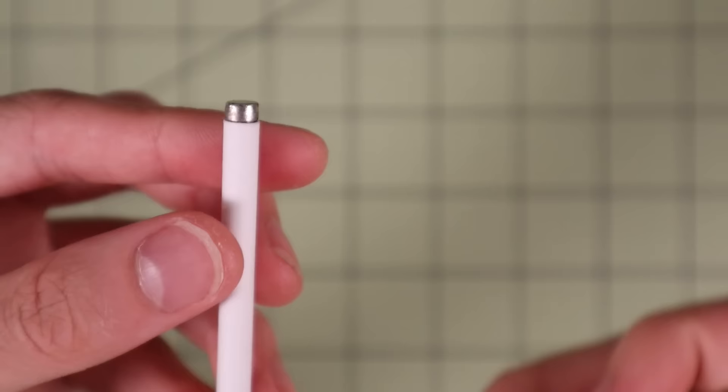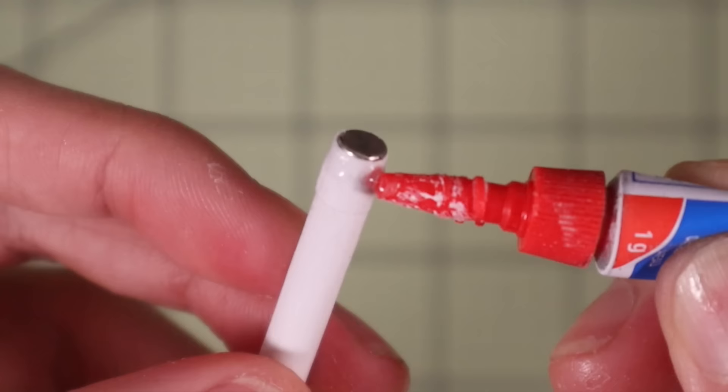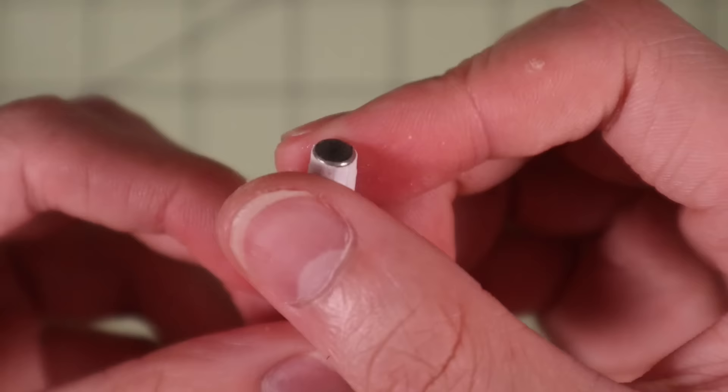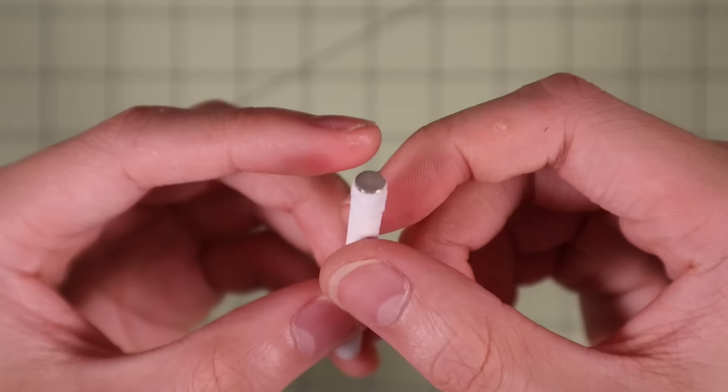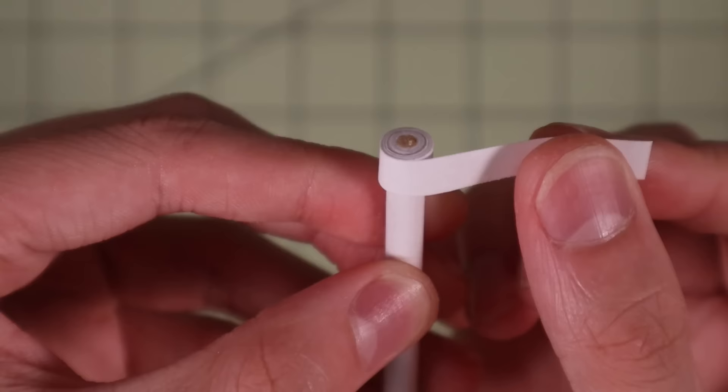Now I'll glue a 5x3 magnet to the end of that bullet and then wrap a tiny strip of paper around it to reinforce it and make sure the magnet won't fall off. Flip it over and I'll wrap a strip of paper around the tip here because on this side I'm going to glue a bigger magnet.